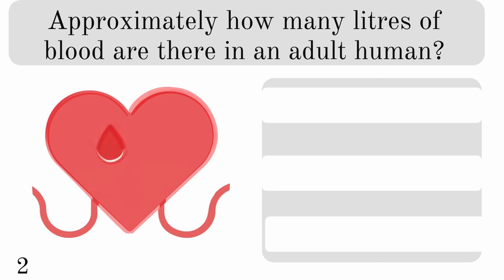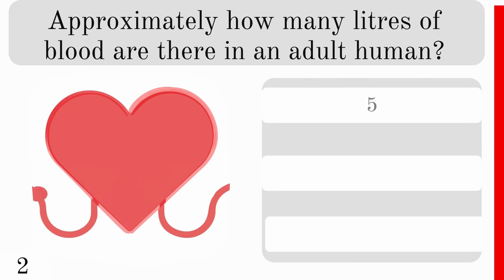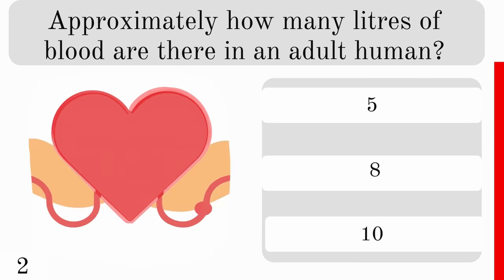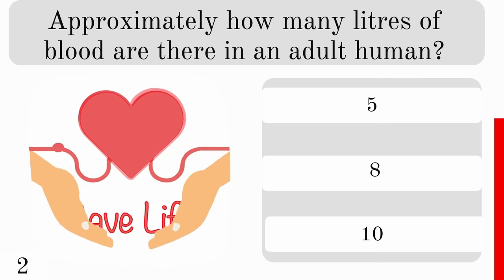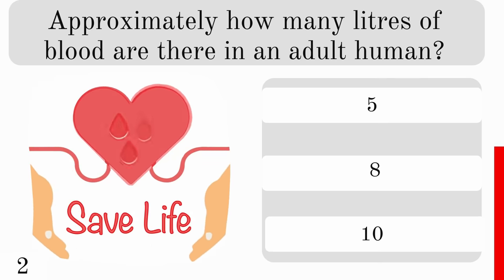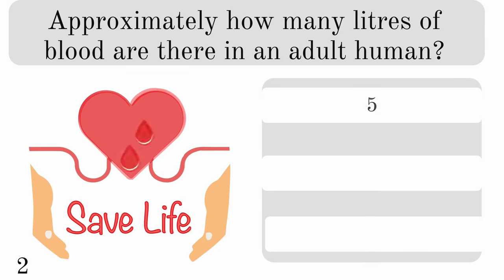Approximately how many litres of blood are there in an adult human? Are there 5, 8 or 10? And the correct answer is 5.